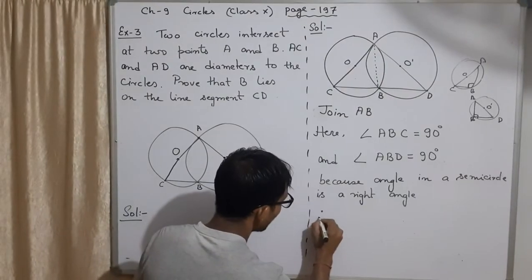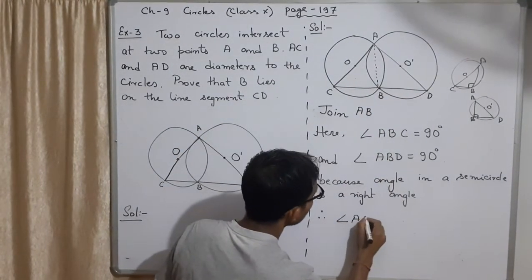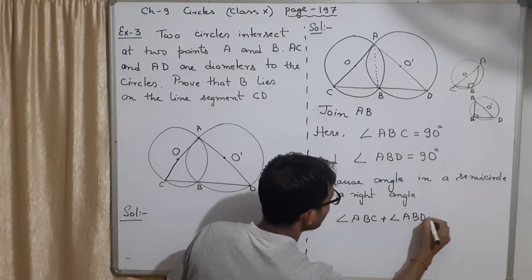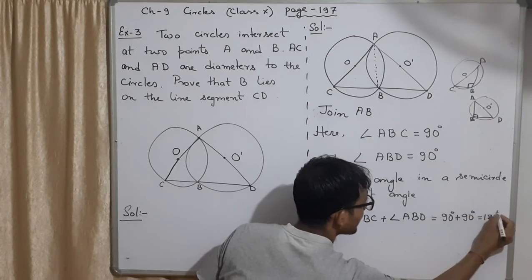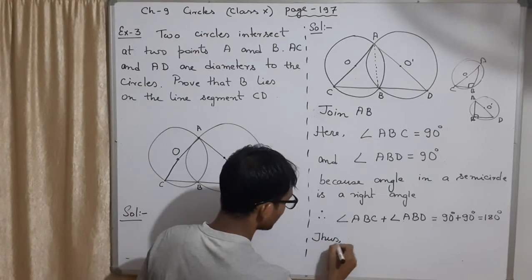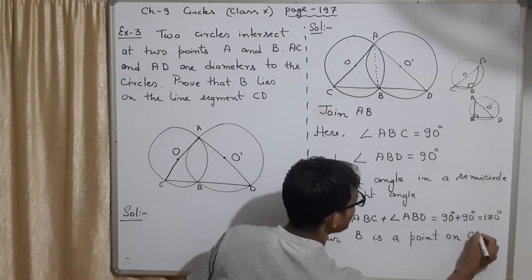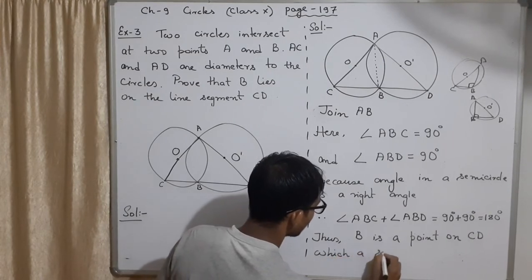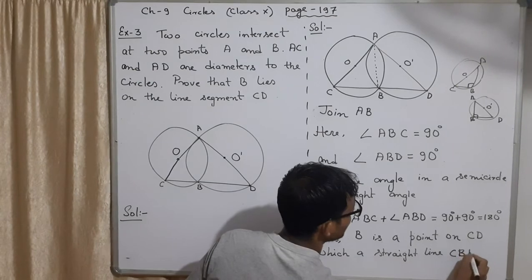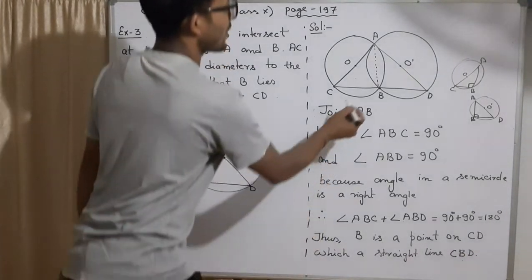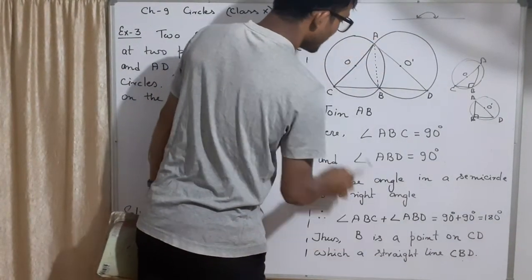So what? Therefore what I can do is if I add ABC and ABD, look at the strength, these angles, this angle and this angle, what will happen? Angle ABC plus angle ABD, what will happen? Equal to 90 degree plus 90 degree equal to 180 degree, which will mean that what? Does B is a point on CD which is a straight line CBD.